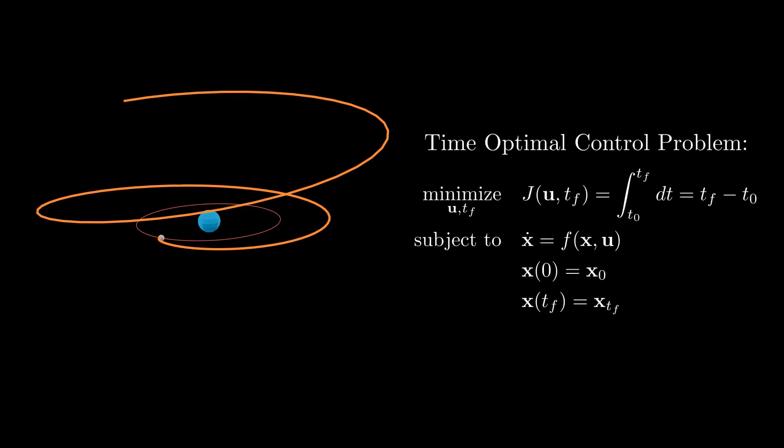Such an optimal control problem can be formulated and solved by applying Pontrygin's maximum principle, thus defining a two-point boundary value problem and solving it, for instance, using a shooting method.